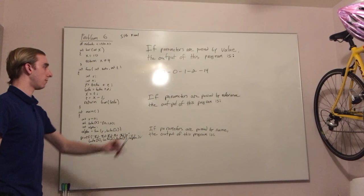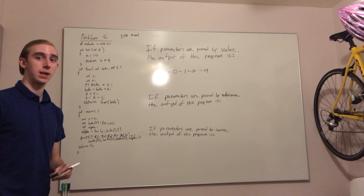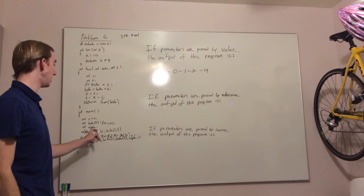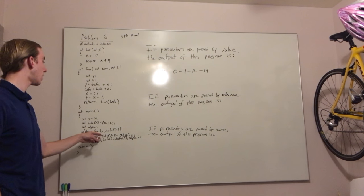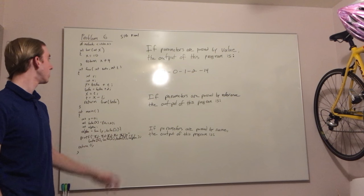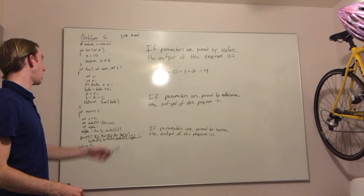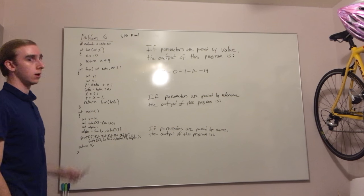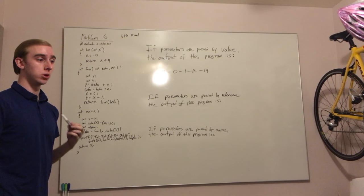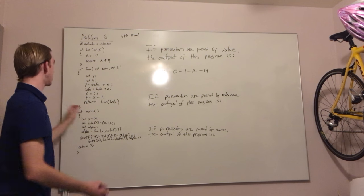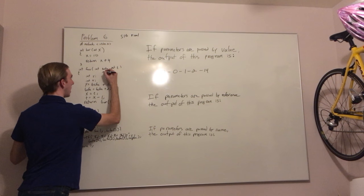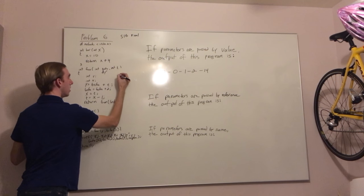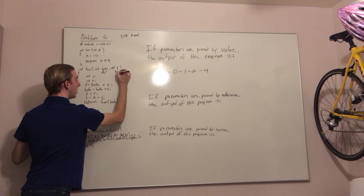The next case, passed by reference, is slightly more complicated because now we pass in the address locations of y and beta of y. So that whenever we change beta and t in foo or x in bar, we are now effectively changing the original parameters. So we will call beta the address of y prime and t to be beta 0.